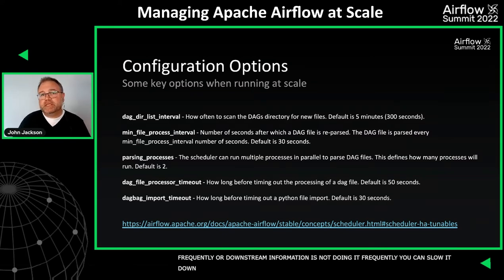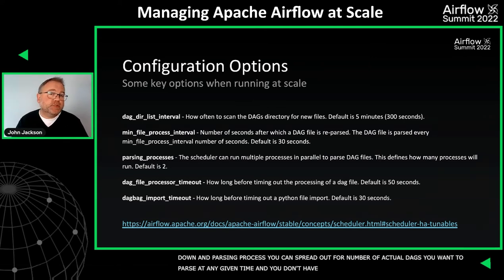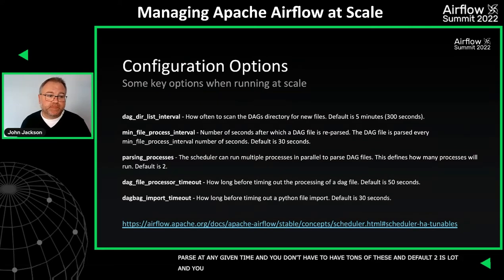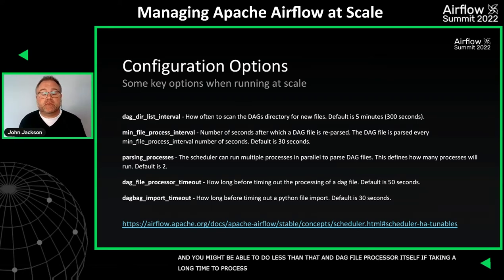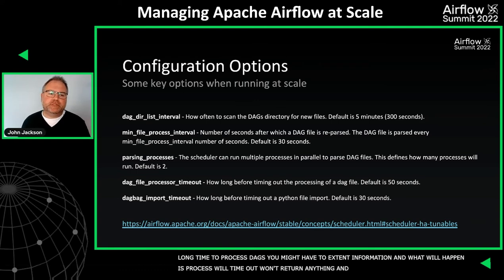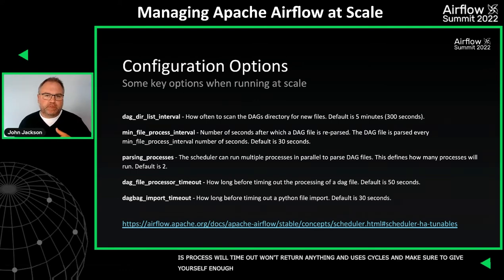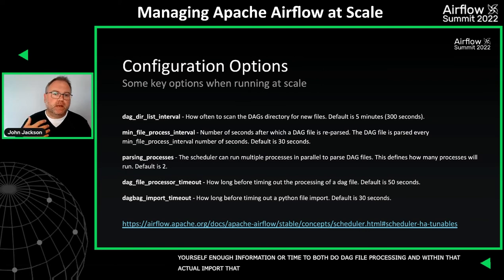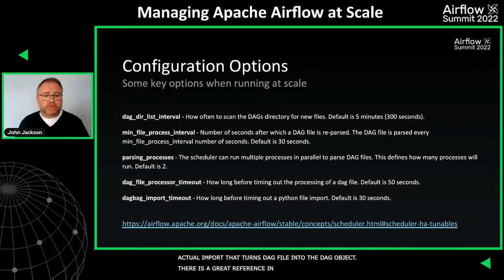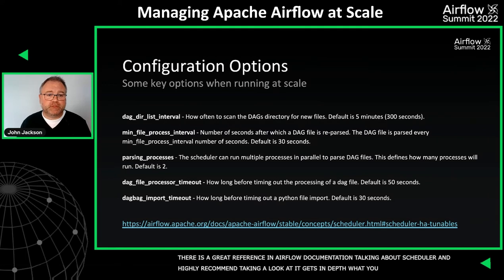With the parsing processes setting, you can control the number of DAGs parsed at any given time. The default is two — that's probably plenty, you might even be able to do less. Within the DAG file processor itself, if it takes a long time to process DAGs you may need to extend the timeout, otherwise the process will time out without returning anything but still consuming all those cycles. Make sure you've given enough time for both DAG file processing and the actual import that turns the DAG file into the DAG object. There's a great reference in the Airflow documentation on scheduler high-availability tunables — highly recommended.